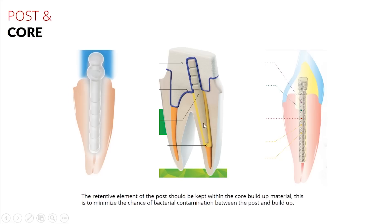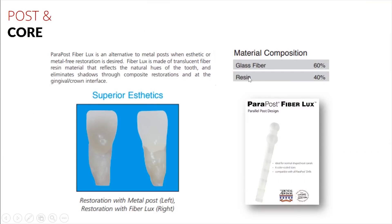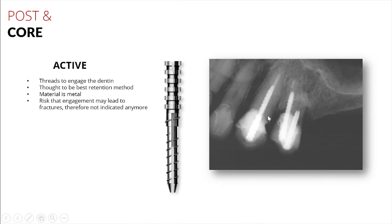Over time after you load this tooth — imagine you're chewing every day — you're cyclically loading this tooth, and eventually that bond between the dentin and the tooth structure is going to be compromised. So we actually need some adjunctive procedure to help retain this core buildup from getting dislodged. That's where a post would come in, aiding in the retention of this core buildup as it goes under cyclic loading. We want that core buildup to be adequately retained within the tooth structure for the long term.